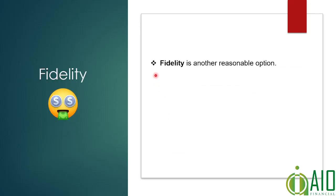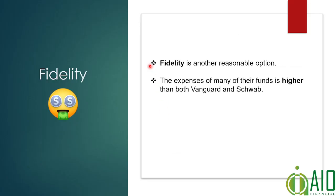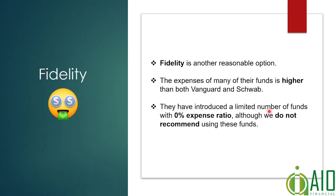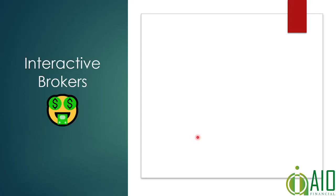Fidelity is reasonable. Their expenses are higher than Vanguard and Schwab. They do have some zero expense ratio funds — this is kind of a marketing thing — but the funds that have zero expense ratios we don't recommend at this point.